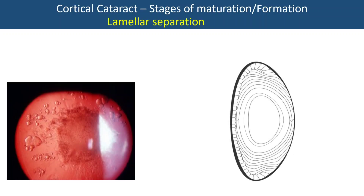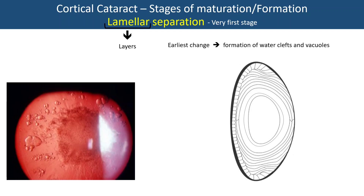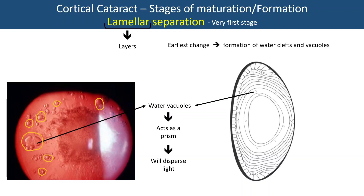Now let's see the stages of formation of cortical cataract. The very first stage is lamellar separation. Lamellar means layers. Cortical cataract takes place due to overhydration. The earliest change that can occur is the formation of water clefts and vacuoles, which can be appreciated on slit lamp examination with retro-illumination technique as small water pockets. These water vacuoles within the lens act as a prism and disperse light, breaking white light into its component colors. The patient's classical symptom at this point is colored halos and glare due to maximum scattering of light.